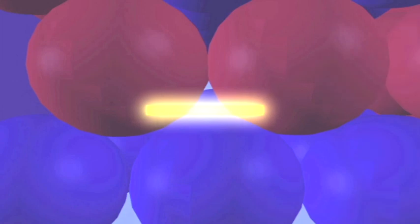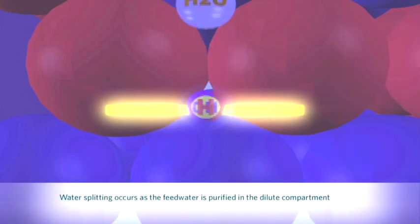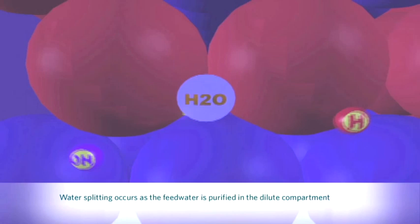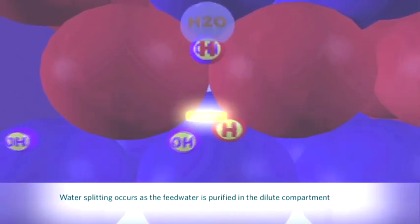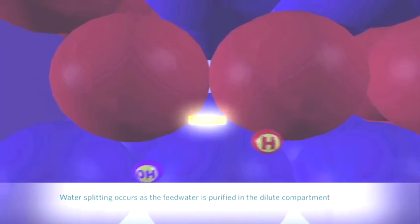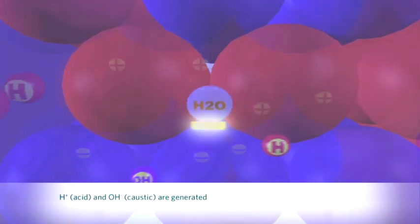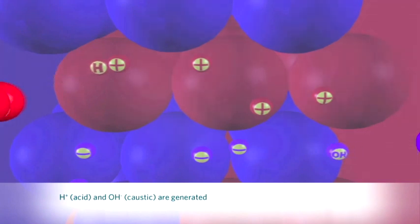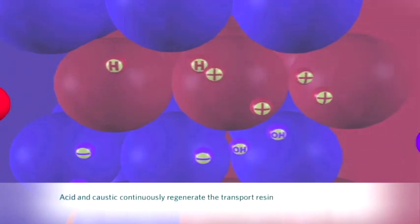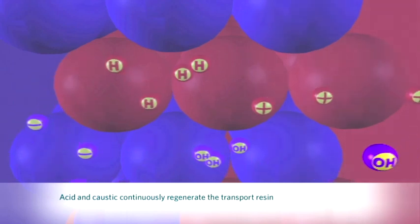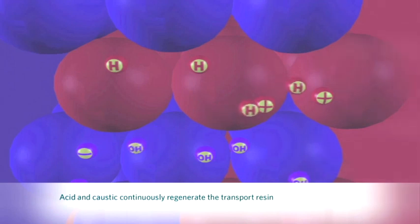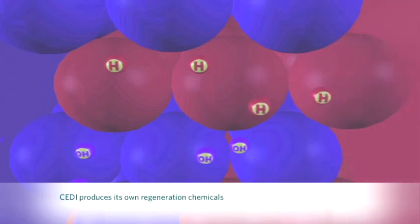the electric field becomes concentrated between the resin beads and the surrounding water. When this localized voltage potential exceeds approximately eight-tenths of a volt, an electrochemical reaction occurs and water molecules are split into hydrogen and hydroxide ions, which are essentially acid and caustic. The acid and caustic generated in the module regenerate the resin beads by replacing other trace ions remaining. The attachment of hydrogen and hydroxide ions to the resin beads is exactly what happens to resin beads when acid and caustic are used for regeneration in conventional deionization systems.